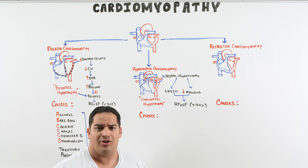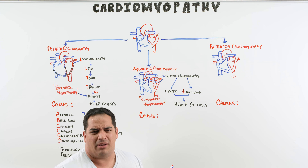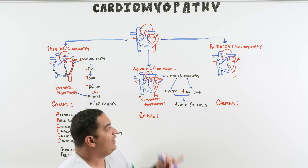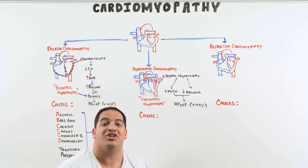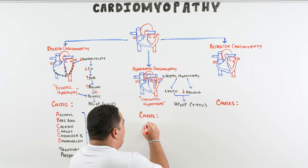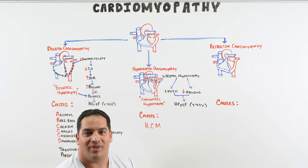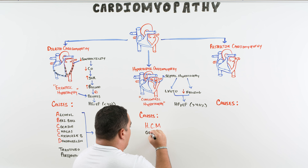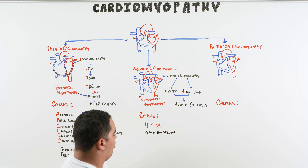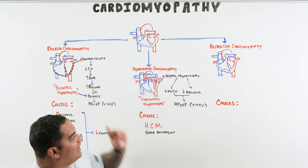What causes the septal hypertrophy? It's usually a genetic mutation — specifically in asymmetric septal hypertrophy. Generalized LV hypertrophy can come from hypertension or aortic stenosis, but true asymmetric septal hypertrophy is from a genetic mutation. The mutation involves the heavy chain myosin gene — conveniently, HCM stands for both hypertrophic cardiomyopathy and heavy chain myosin, which helps with remembering this.